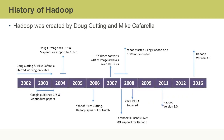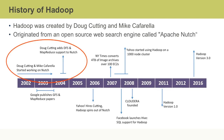Hadoop originated from Google file system papers in 2003. In 2006, Apache Nutch started a sub-project which led to the birth of Hadoop 0.1, and continued to evolve by the many contributors to the Apache Hadoop project.